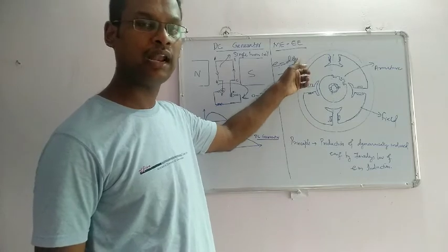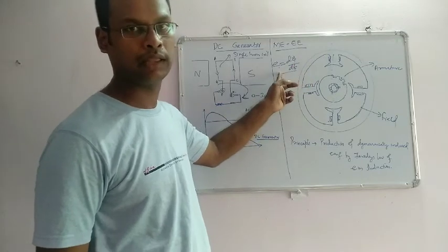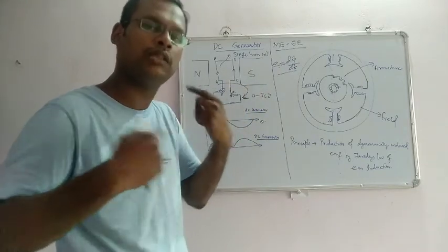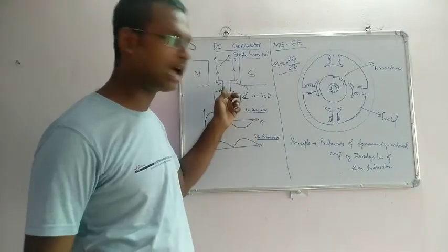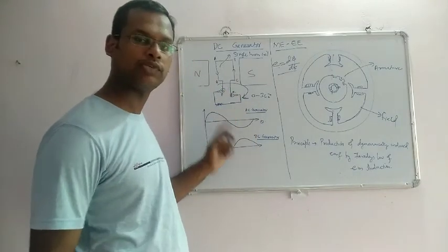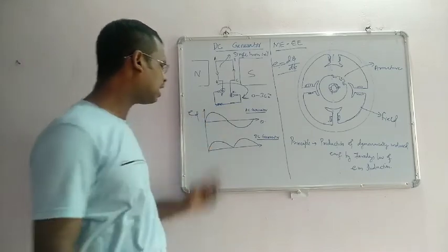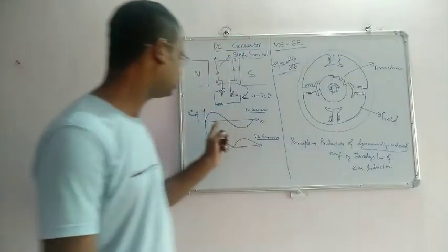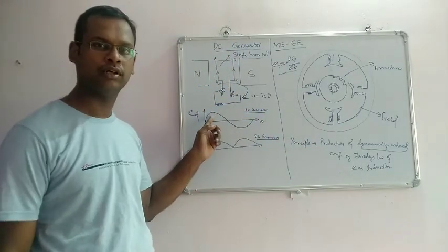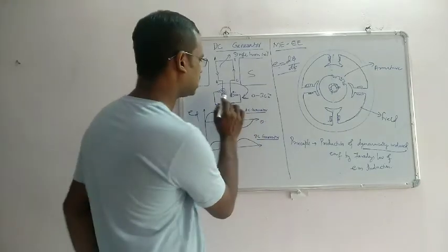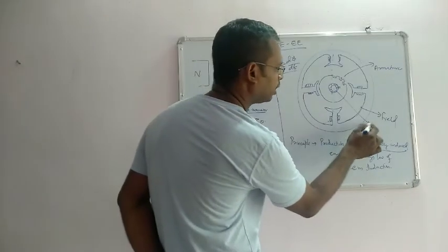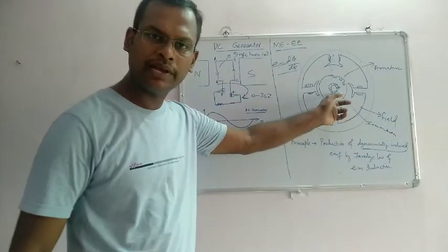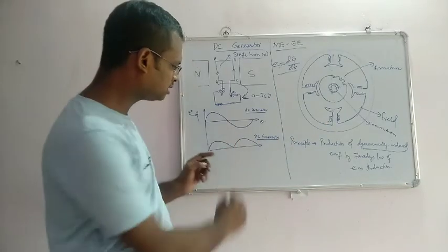If we change the flux, an EMF is generated according to Faraday's law. As the coil rotates from 0 to 360 degrees, this dynamically induced EMF is produced. The EMF generated is AC in nature — it is an AC EMF, making this essentially an AC generator. A commutator is used in the machine to convert this AC to DC.